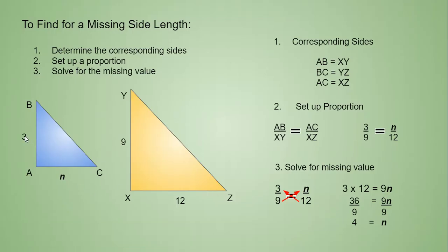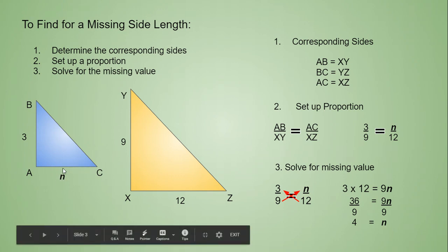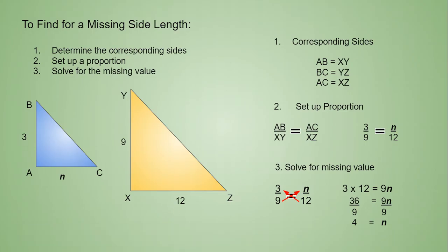You might have also noticed that here, 3 times 3 does give you 9. And so getting the value 4 for N, plugging that in here, 4 times 3 does give you a value of 12. So these are proportional and they are similar triangles.